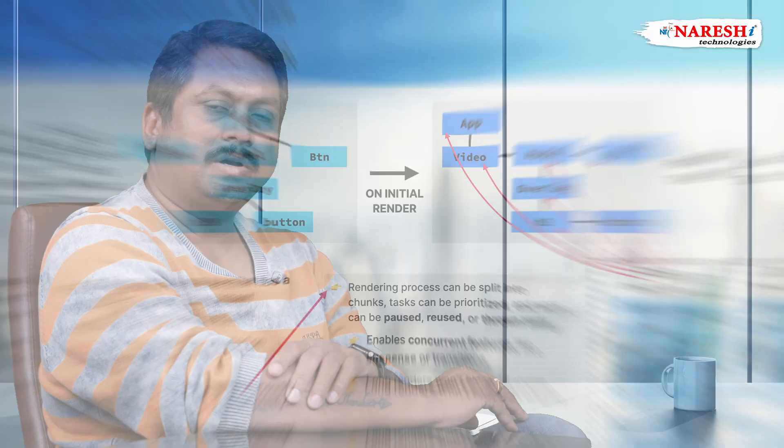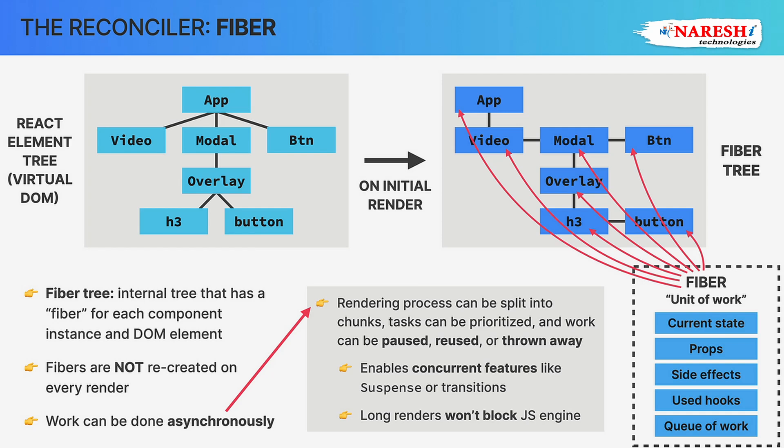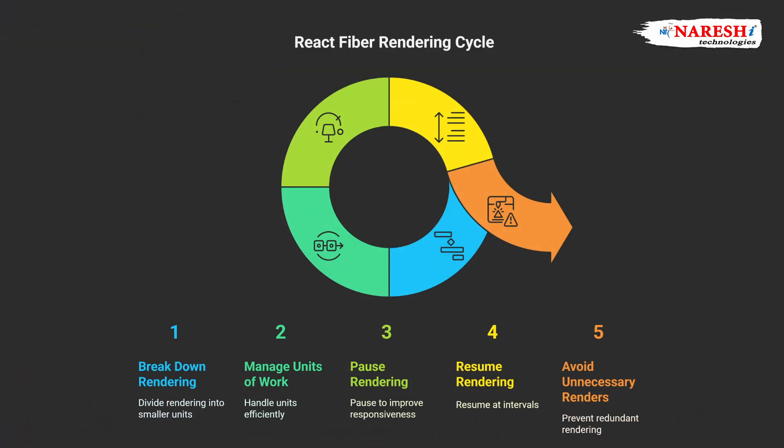What React Fiber will do is split the entire rendering work into units of work. The advantage of that is it can pause the rendering and it can resume the rendering whenever required at regular intervals. So unnecessary renders will not happen.